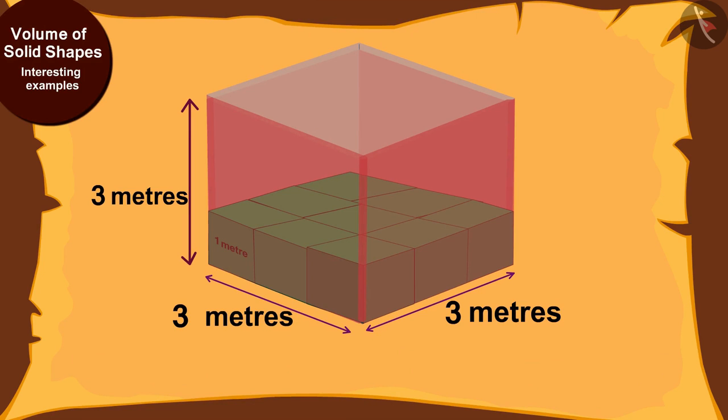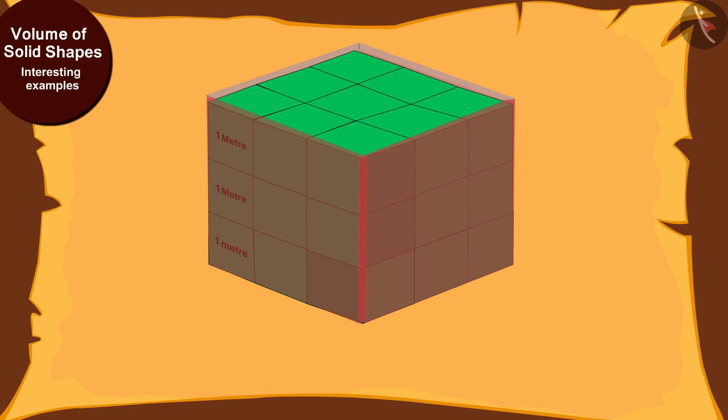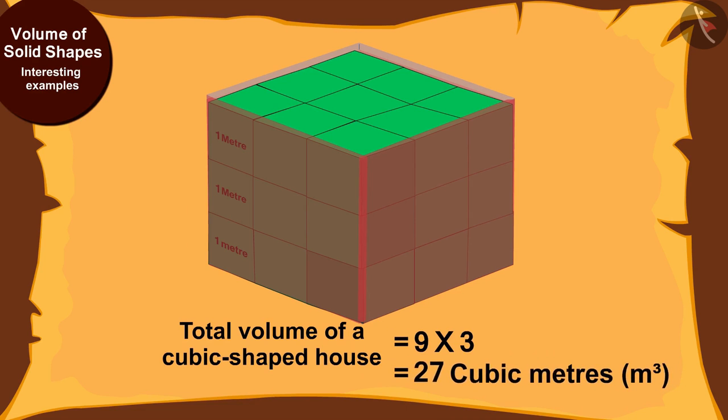In other words, a cube shaped house will have 3 layers made up of cubic meters. The volume of each layer is equal to 9 meters cubed. This means the total volume of a cubic shaped house will be 9 times 3, that is, equal to 27 cubic meters.